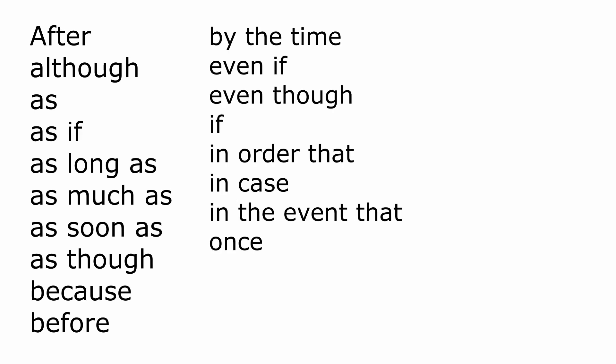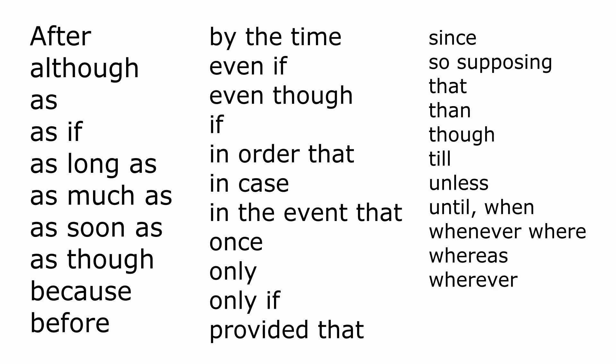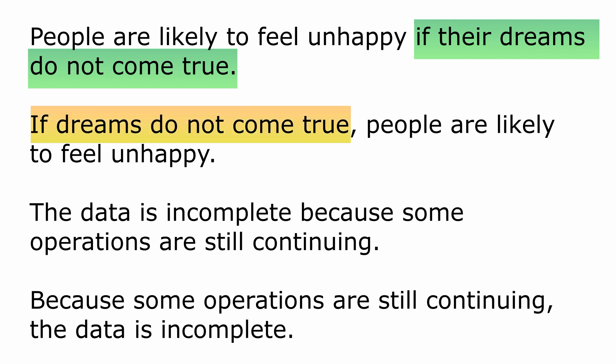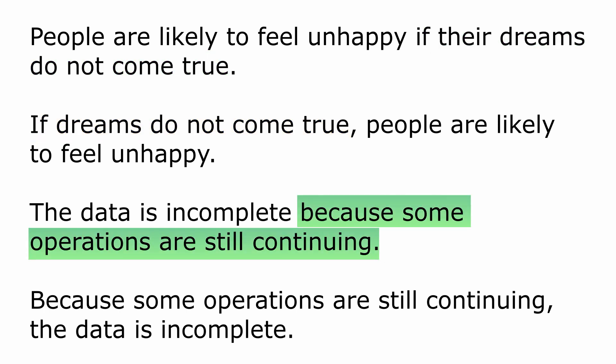The same rule is also applied to other subordinating conjunctions. Let's look at some more examples. 'People are likely to feel unhappy if their dreams do not come true' — no comma. But if we write: 'If dreams do not come true, comma, people are likely to feel unhappy.' The same in the next example: 'The data is incomplete because some operations are still continuing.' Versus: 'Because some operations are still continuing, comma, the data is incomplete.'